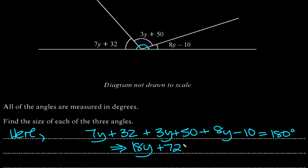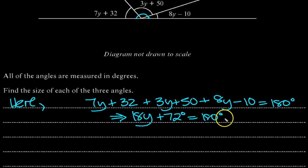So it's plus 72 degrees equals 180 degrees. Move the 72 through the equals. 18y is equal to 180 minus 72 degrees. So 18y is equal to 108 degrees.